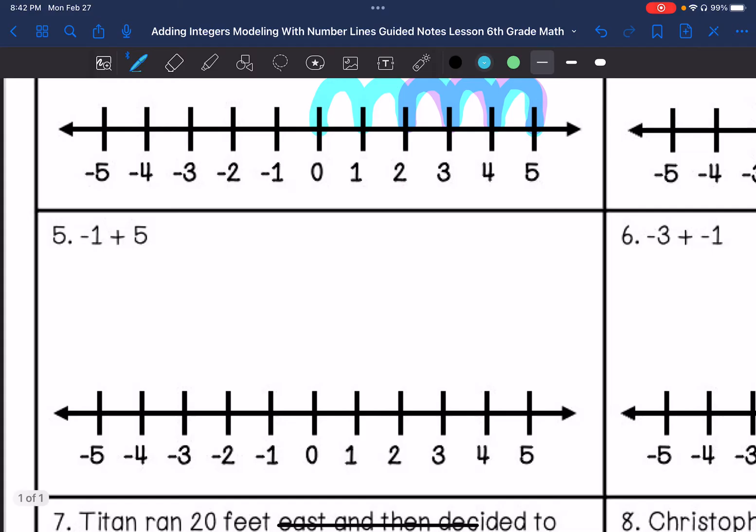Number five: negative one plus five. One to the left. And then I'm going to go right five: one, two, three, four, five. So my answer is positive four.